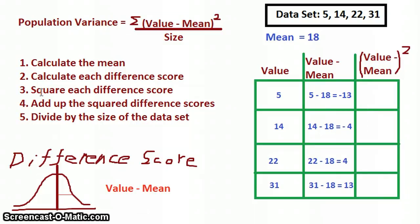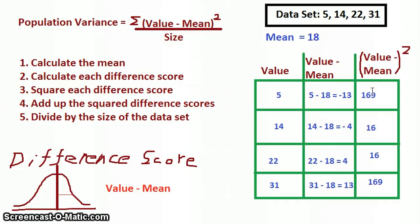And that's the reason why we have step three, which is to square each of the difference scores. When we square each of these difference scores, we'll then have all positive numbers. For example, negative 5 squared is negative 5 times negative 5, which is positive 25; negative 7 squared gives positive 49. So by squaring our difference scores, all the values will be positive, and that's how we get around the fact that the difference scores always add up to zero. So: negative 13 squared is 169, negative 4 squared is 16, positive 4 squared is 16, and positive 13 squared is 169.